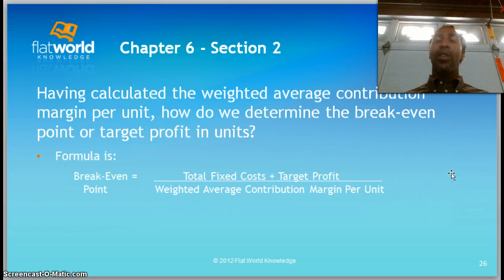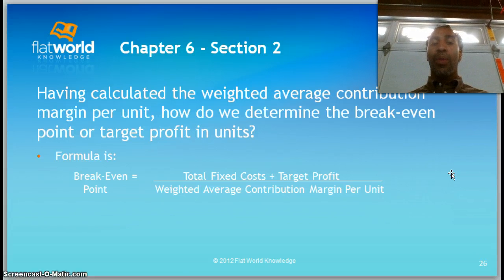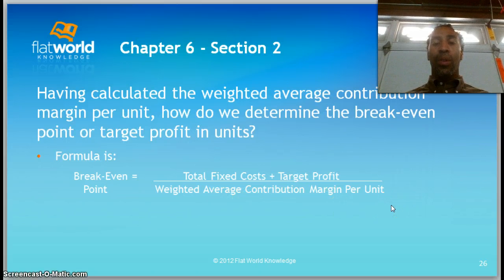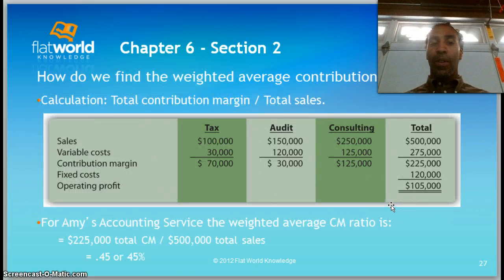Having calculated the weighted average contribution margin per unit, how do we determine the break-even point or target profit in units? The break-even equation is: total fixed cost plus target profit, divided by the weighted average contribution margin per unit. If we're doing it for break-even, the target profit is zero, and you divide by that weighted average CM per unit.